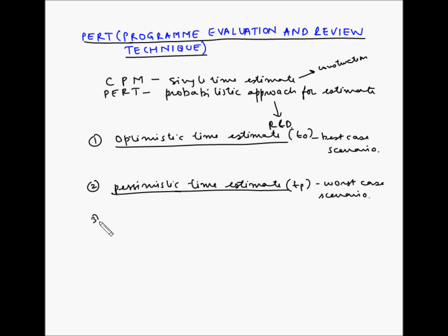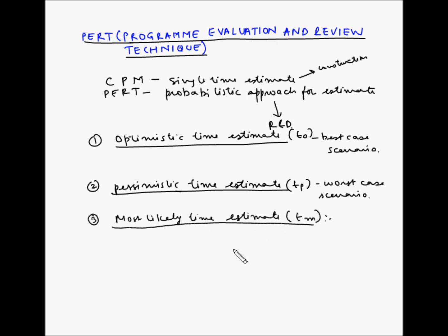The third estimate is the most likely time estimate, also denoted as TM. This is the time estimate that has the highest probability of occurrence. It takes into consideration the productivity of the likely resources to be assigned to the project or activities, as well as the regular interruptions that can happen to complete the activities.